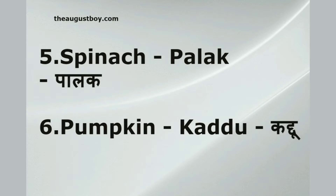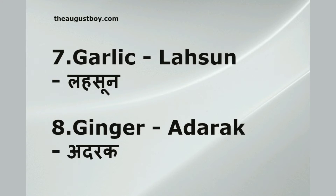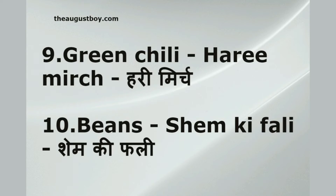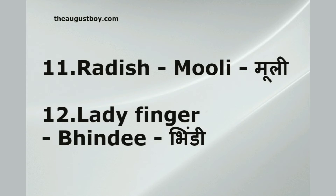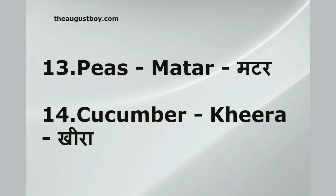Spinach — palak. Pumpkin — kaddu. Garlic — lasan. Ginger — adrak. Green chili — hari mirch. Beans — sem ki phali. Radish — mooli. Lady finger — bhindi. Peas — matar.